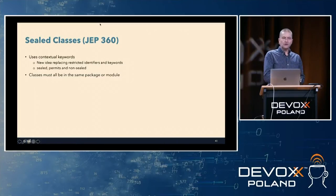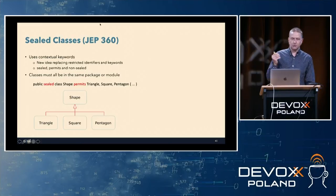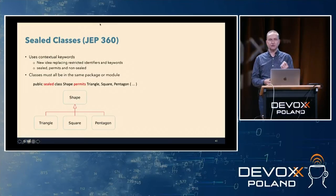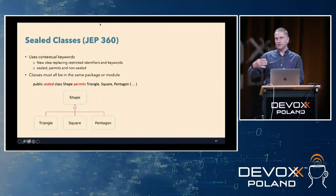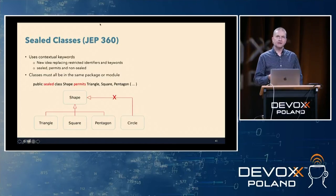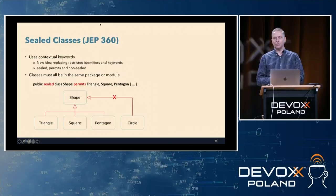In sealed classes, all of the classes involved must be either in the same package or in the same module. Taking our example of Shape, Triangle, Square, and Pentagon: we define our class Shape and add the modifier sealed — public sealed class Shape — then add a permits clause listing Triangle, Square, and Pentagon. Now if somebody comes along and says they want to create a subclass called Circle, because it's not in the permits clause the compiler will reject it and give you an error — you won't be able to compile your code.